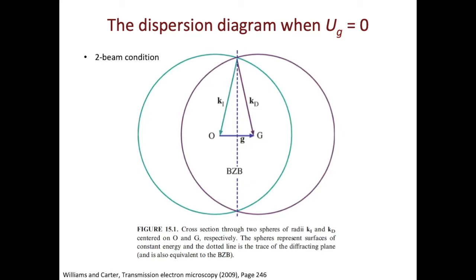The circles you see on this slide represent the surfaces of constant energy, and it is called the dispersion surfaces. You can also see the dashed line in this figure. The dashed line is the trace or the projection of the diffracting plane. The diffracting plane in real space is always perpendicular to the g-vector. The diffracting plane is also equivalent to the Brillouin zone boundary in solid-state physics.